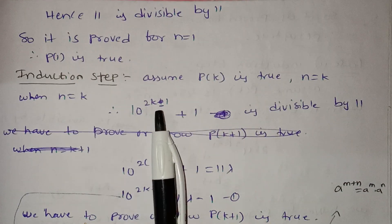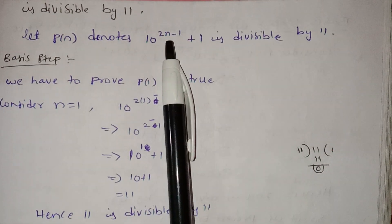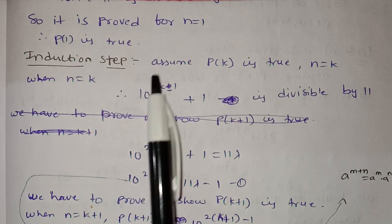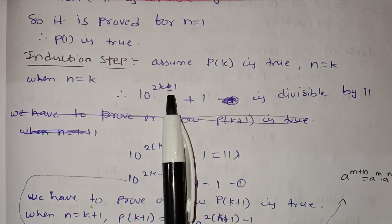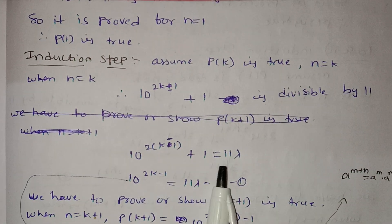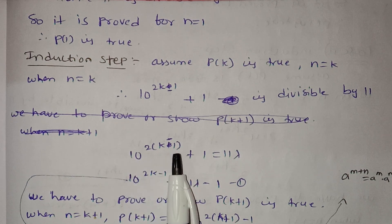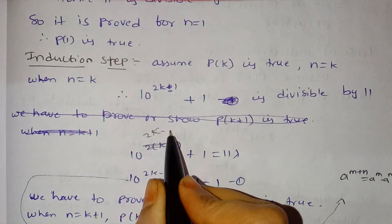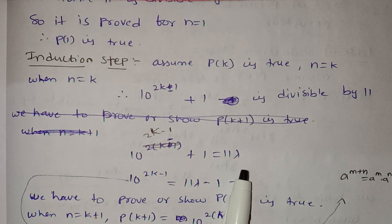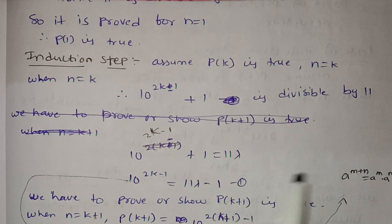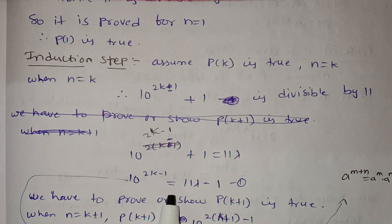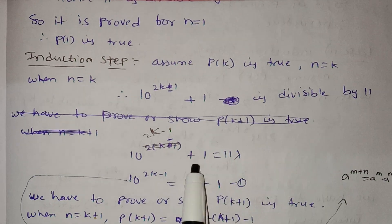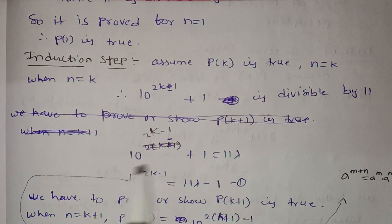When n equals k, we have 10 power 2k minus 1 plus 1 is divisible by 11. So let 10 power 2k minus 1 plus 1 equal 11λ. Therefore 10 power 2k minus 1 equals 11λ minus 1. This is equation 1.